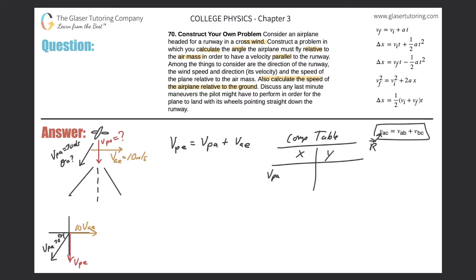List V_PA (velocity of plane relative to air) and V_AE (velocity of air relative to earth) — when summed, they give the resultant V_PE. For V_PA: it has both x and y components. The x component is in the negative direction, so call it negative V_x; the y component is also negative going straight down, so call it negative V_y.